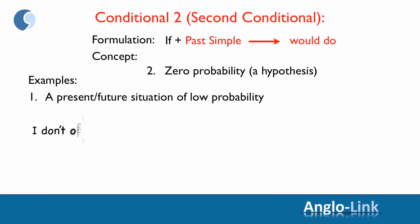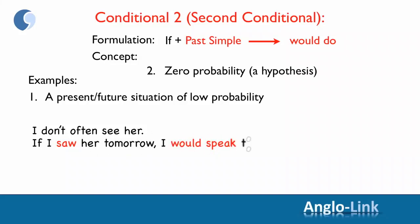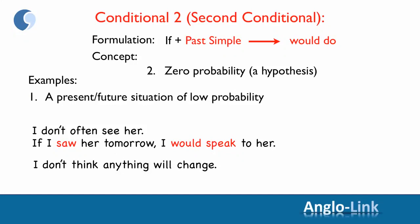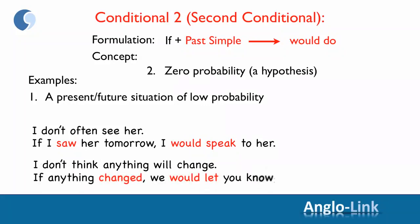For example: 'I don't often see her, so it's not very probable that I will see her tomorrow, but if I saw her tomorrow, I would speak to her.' Second example: 'I don't think anything will change — there is a very low probability of change, but if anything changed, we would let you know.'